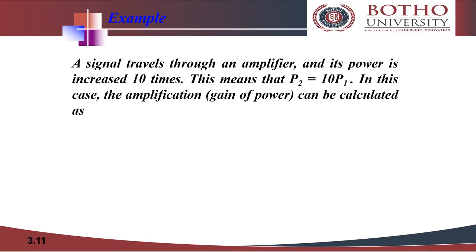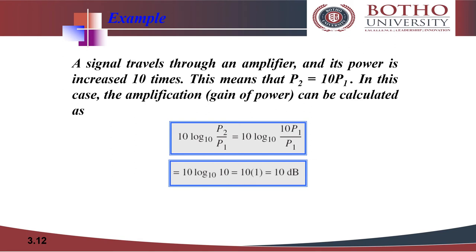In the previous example we saw a scenario where there is loss of power. In this case we are going to demonstrate how to calculate amplification, that's gain of power. There is no difference in terms of the formula because we have to compare it with P1 and P2. For example, let's consider this scenario: a signal travels through an amplifier and its power is increased 10 times. This means that P2 equals 10 times of P1. So in this case the amplification, also called the gain of power, can be calculated and the formula for calculating is shown here.